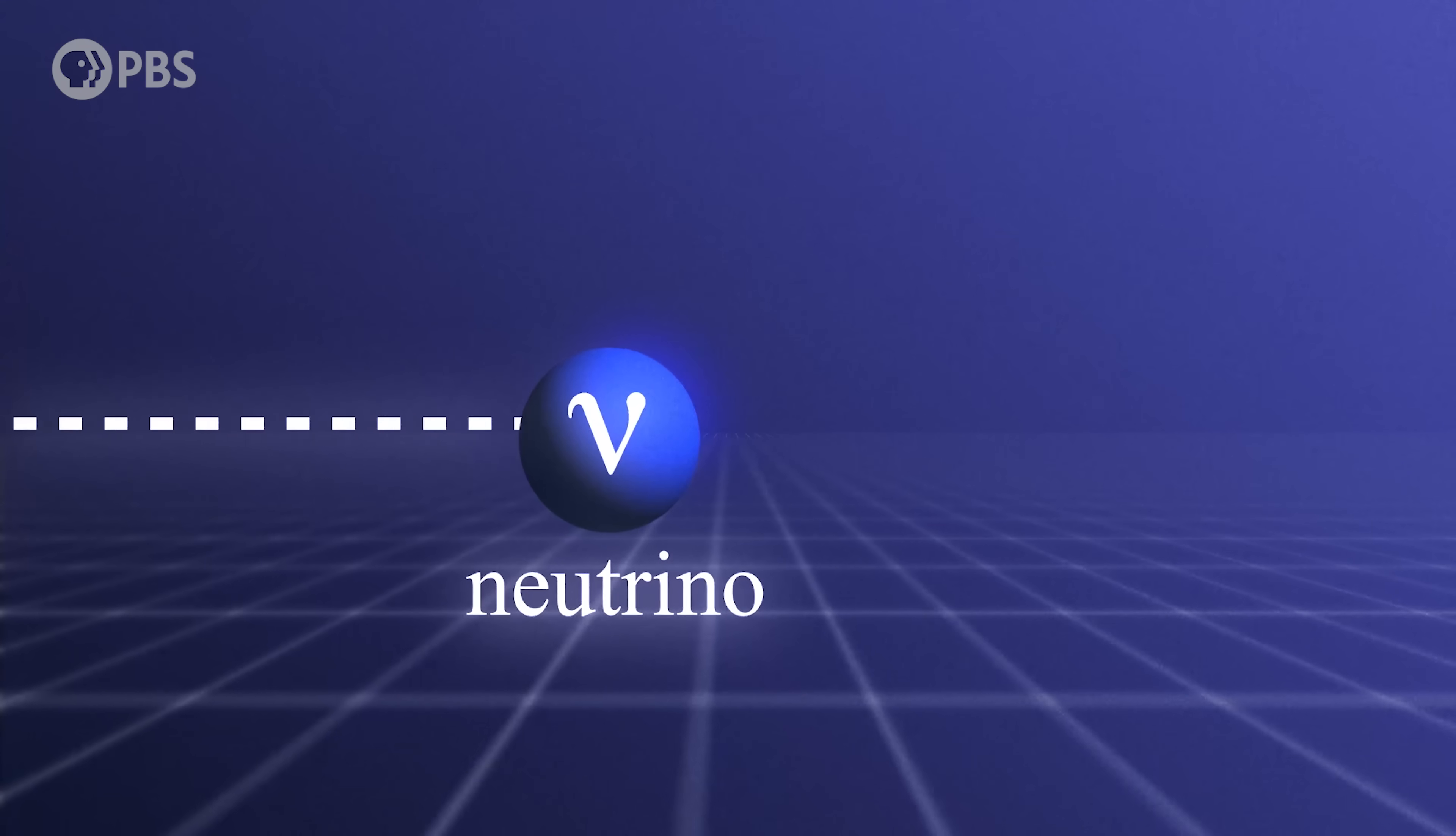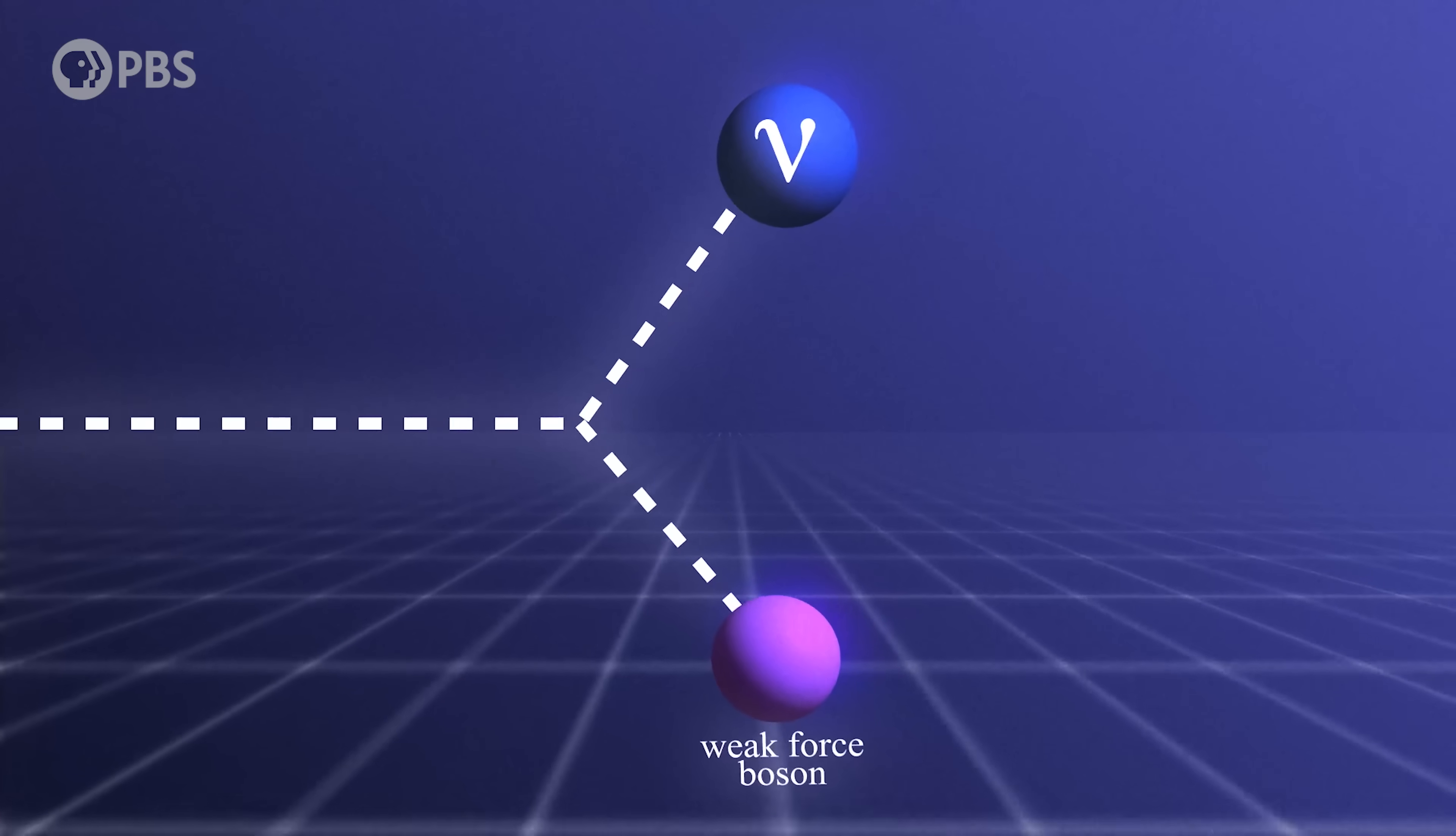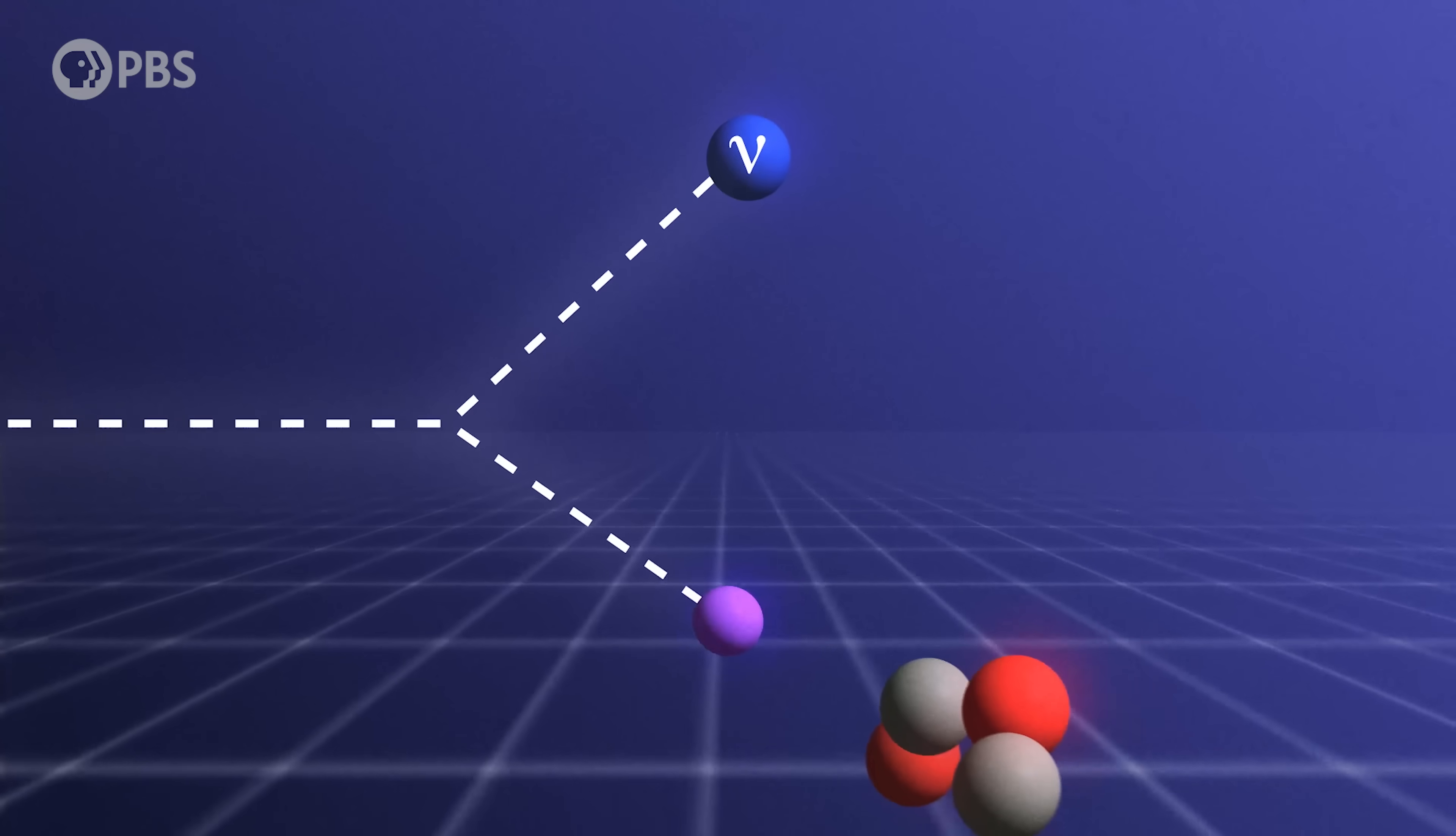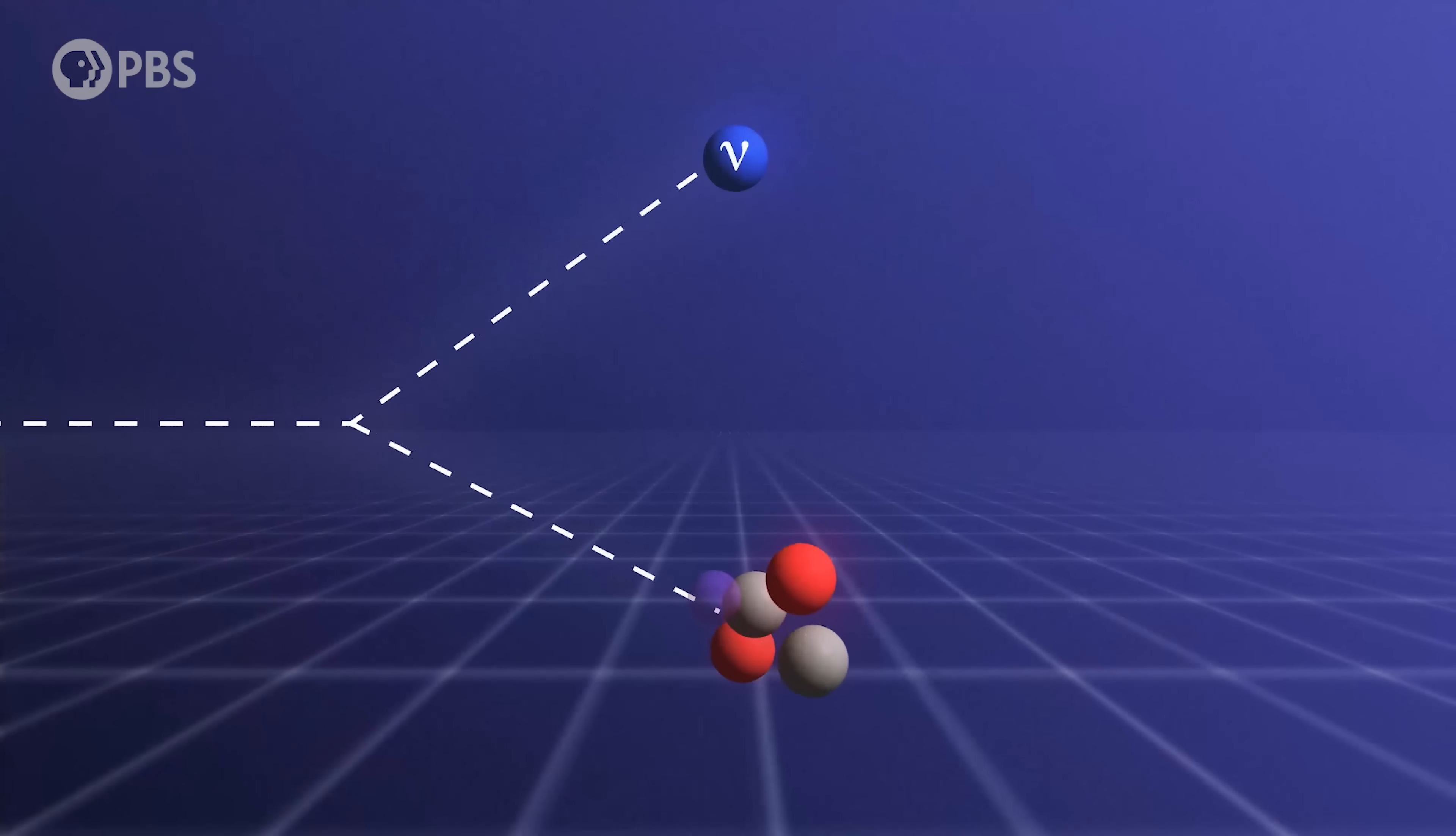In order to interact with other types of matter, a neutrino needs to exchange one of the carriers of the weak force, a W or Z boson. It's truly a virtual boson. It exists only for an instant, just long enough to exchange energy between the neutrino and, say, the nucleus of an atom.